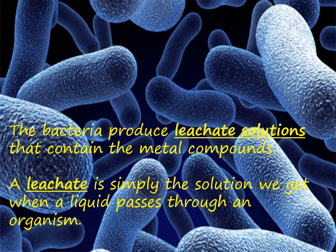So bioleaching uses bacteria to produce leachate solutions that contain metal compounds. Bacteria are mixed with the low grade copper ore and they produce a leachate. A leachate is simply the solution we get when a liquid passes through an organism. And the leachate will contain the metal compounds, for example, copper sulfate.